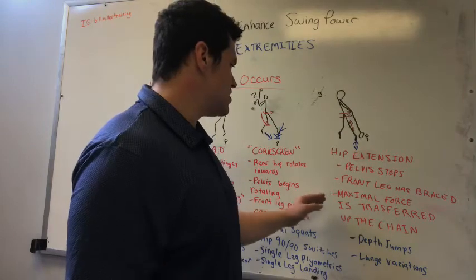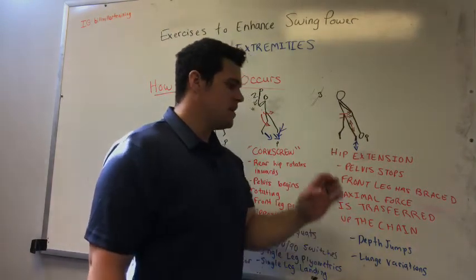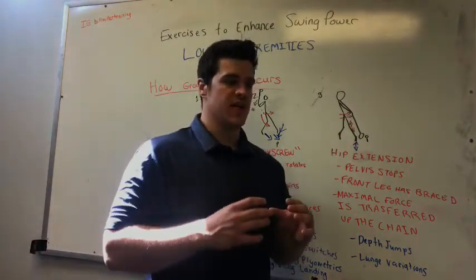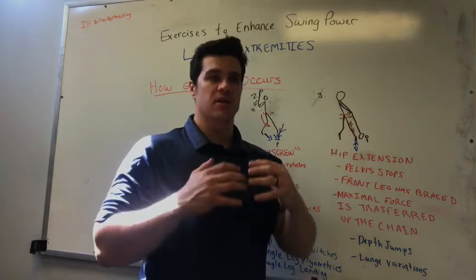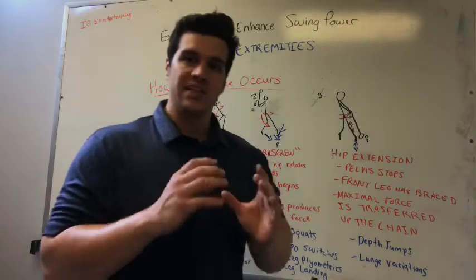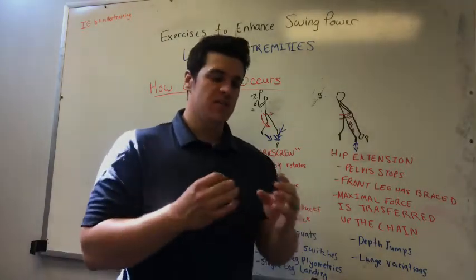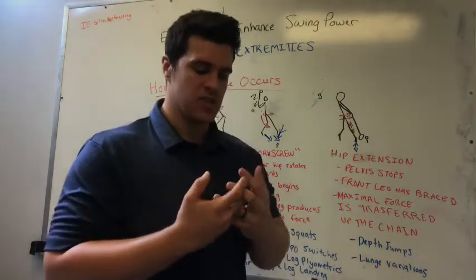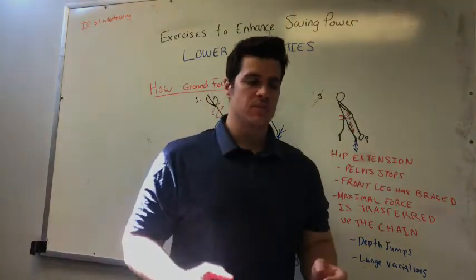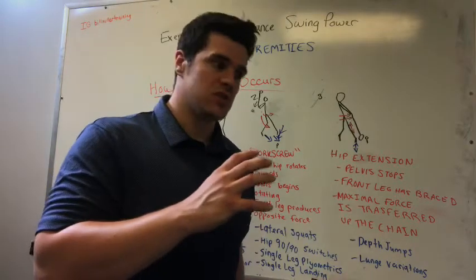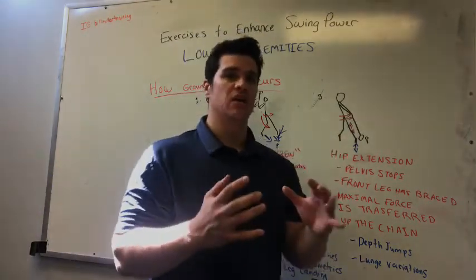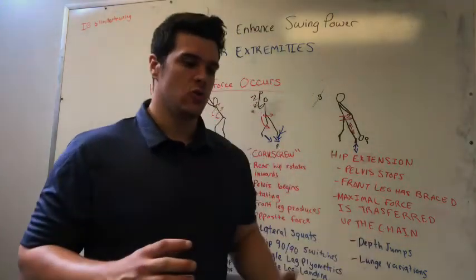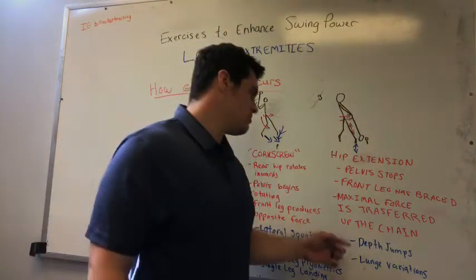Movements like deadlift and lunge variations do a great job of training the lead leg. We want to transfer as much energy up the kinetic chain as possible, and that only occurs when the lead leg is relatively stiff. That means the muscle groups have a large content of titin — a large protein molecule that resists excessive lengthening of the muscles — allowing more energy to be stored in the eccentric portion and transferred up the chain. Athletes with weak or less stiff legs will struggle to rapidly transfer force up the kinetic chain.